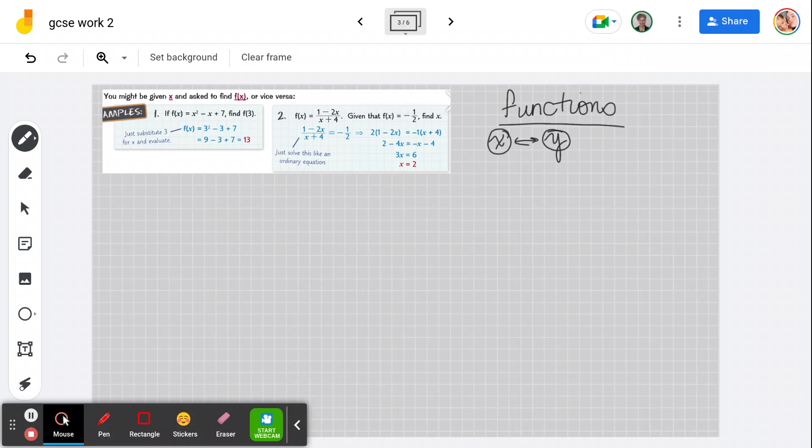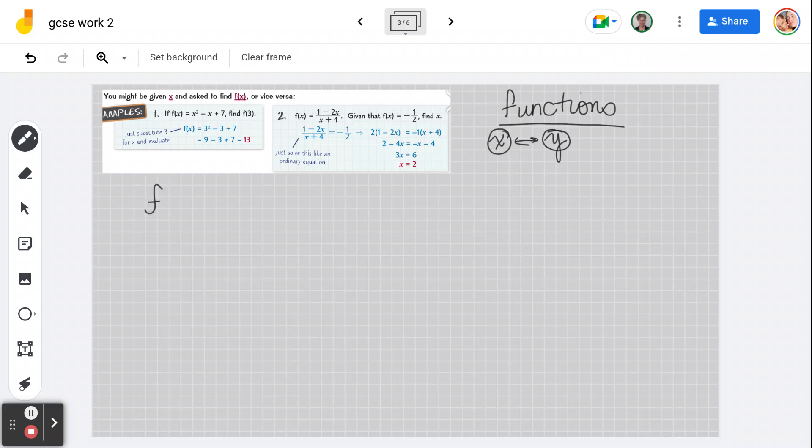So let's have a look here. Sometimes you're given x, and sometimes you're asked to find f(x), which is your y. So example, if your function is equal to x squared minus x plus 7, find when your function, when x is equal to 3. You simply substitute it in.